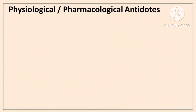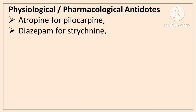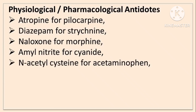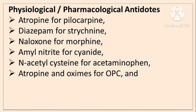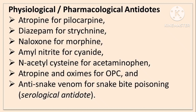Physiological or pharmacological antidotes act by causing effects opposite to that of the poison. Examples are: atropine for pilocarpine, diazepam for strychnine poisoning, naloxone for morphine, amyl nitrite for cyanide, N-acetylcysteine for acetaminophen, atropine and oximes for OPC, and anti-snake venom for snakebite poisoning — this is a serological antidote.